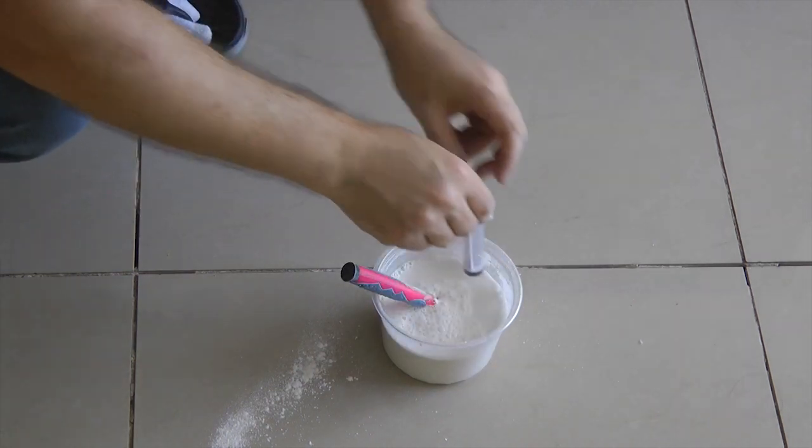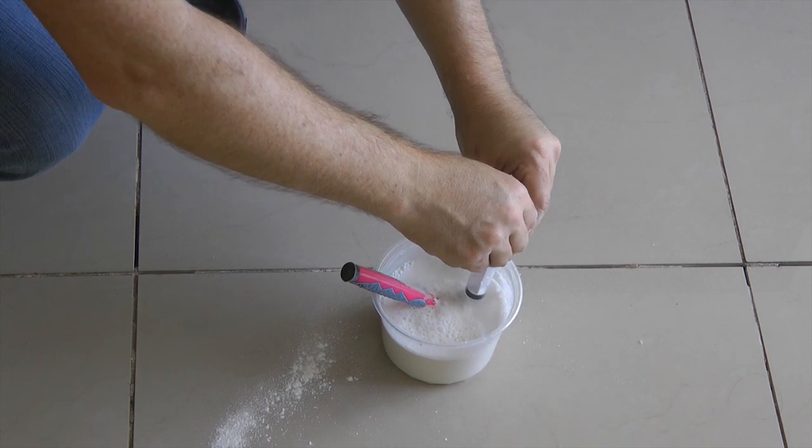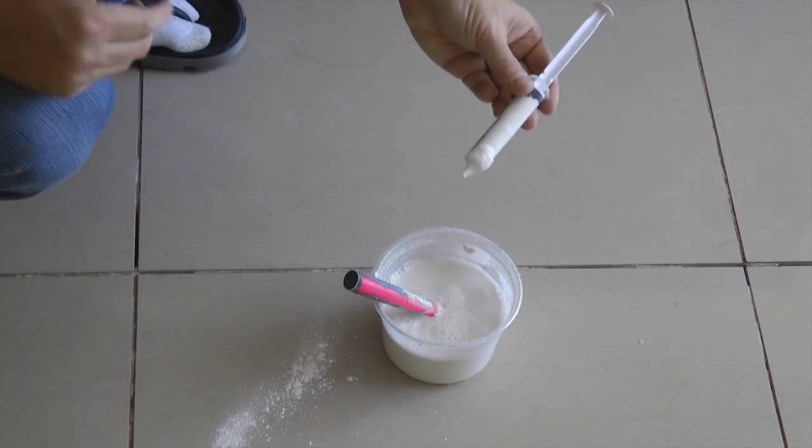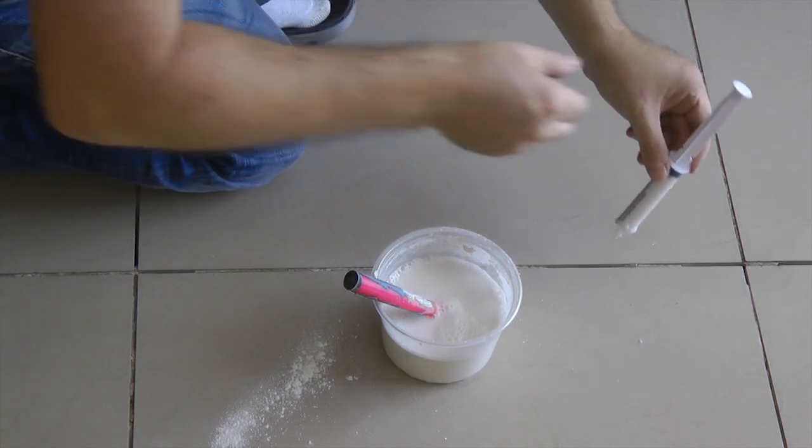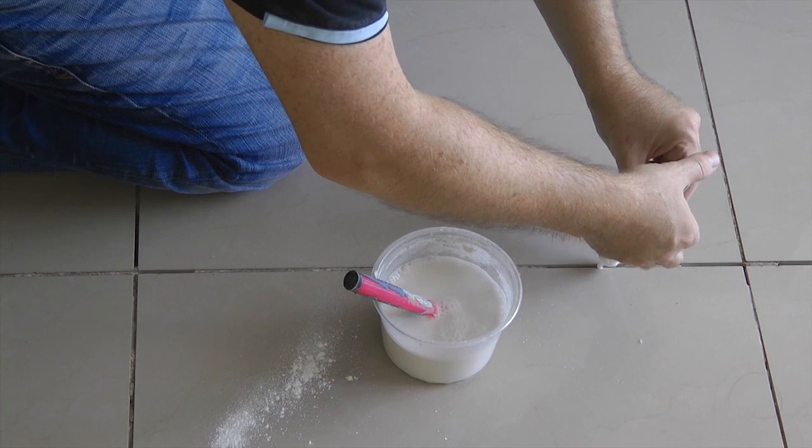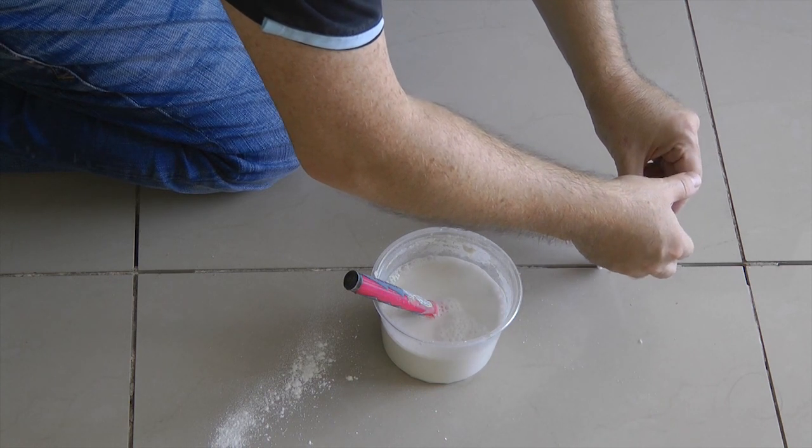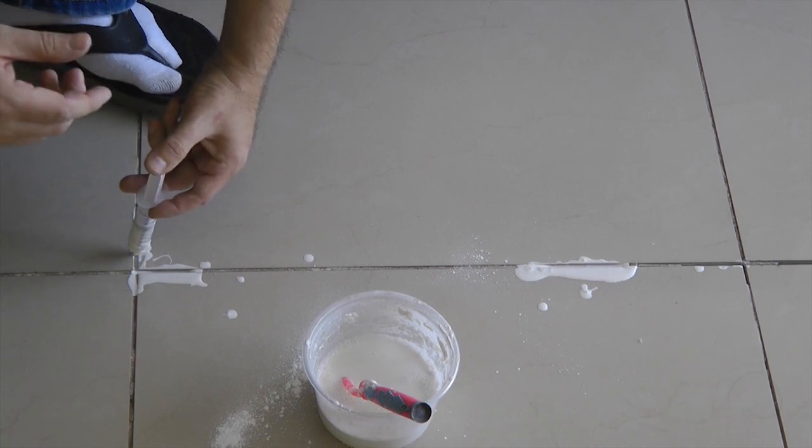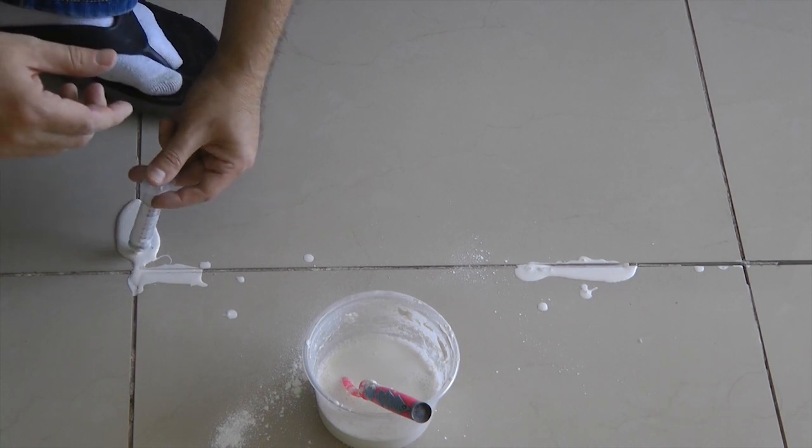When the mixture is ready, we will take a conventional disposable syringe and fill it with our mixture. And with the help of a syringe, we will fill our mixture through the cracks that formed between the tiles. We pour so much mixture until we see that it is getting back out from under the floor.